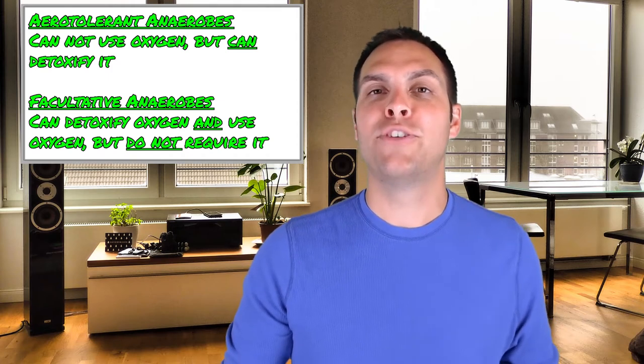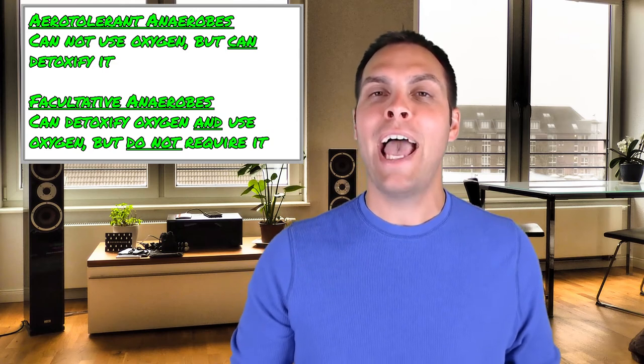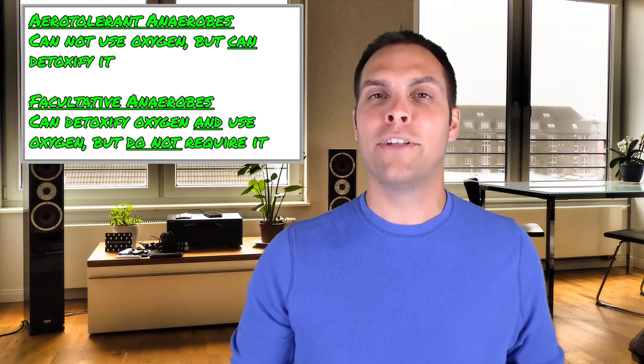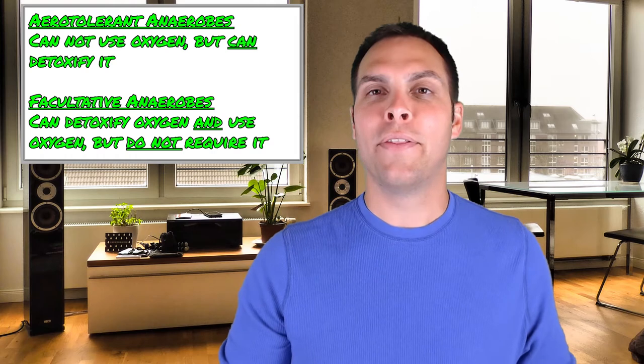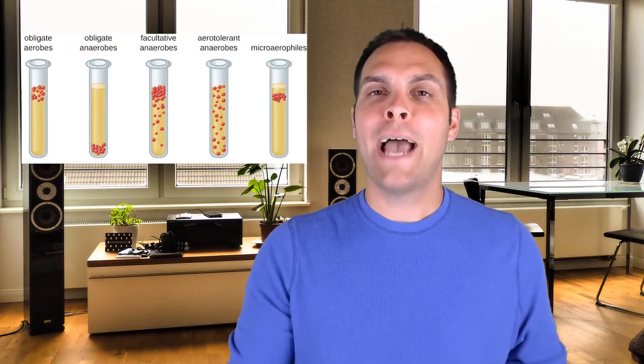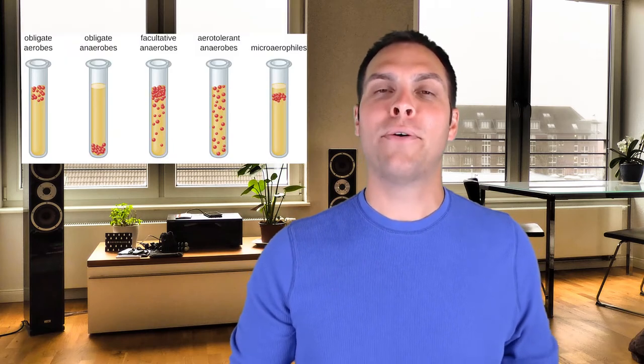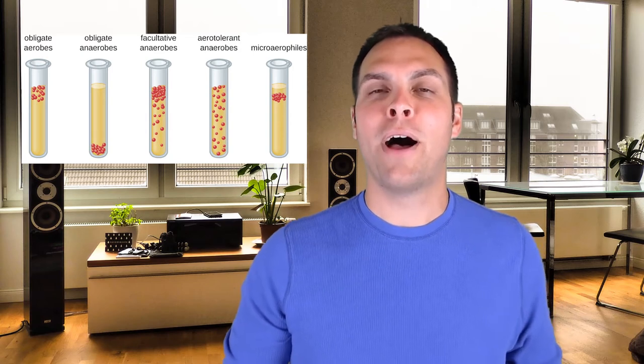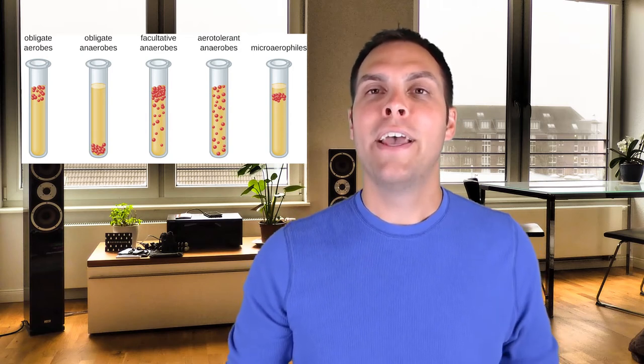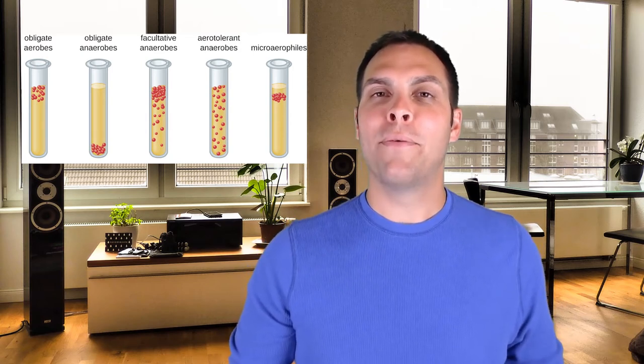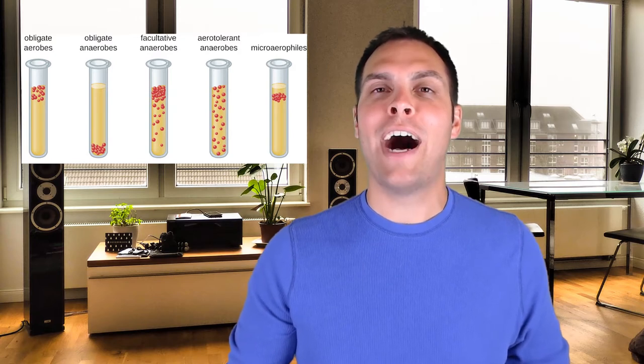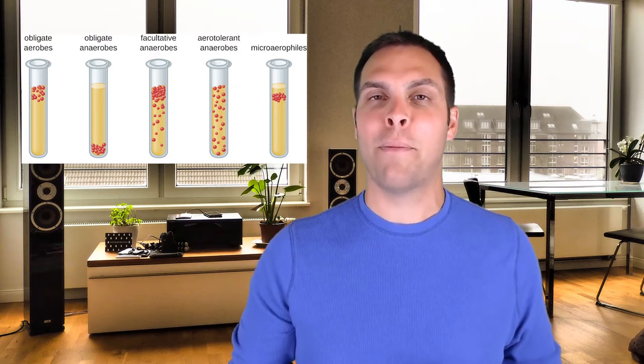One great way to identify the relationship that microbes have with oxygen is to grow them what we call a capped liquid broth tube. So the capped tube test is very simple. You take your organism, you put it into the liquid broth, you screw the cap down tightly, and you shake it. Now remember that when you screw that cap down, there'll be a little bit of oxygen trapped in that headspace up at the top of that tube.